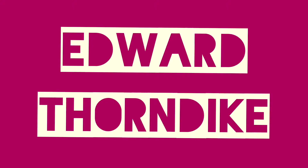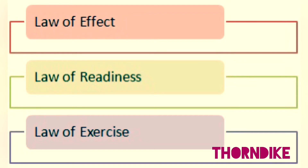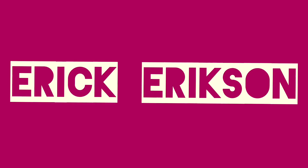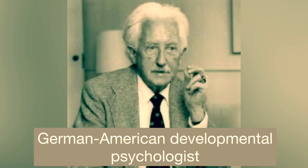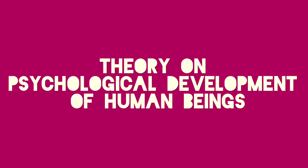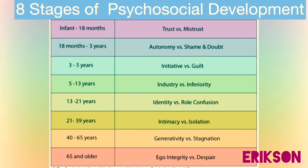Edward Thorndike. He's an American psychologist who developed the learning theory called connectionism. He presented three laws of learning on the basis of his experiments in the field of animal psychology. Eric Erickson was a German-American developmental psychologist and psychoanalyst known for his theory on psychological development of human beings, also known as Erickson's eight stages of psychosocial development.